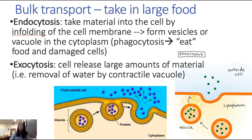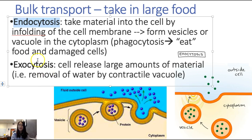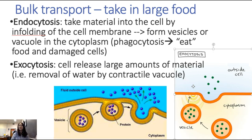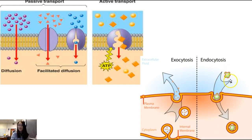You can also do bulk transport, which also requires energy. Bulk transport is for taking in large chunks of material too large to go through the cell membrane directly. We do something called endocytosis or exocytosis. Exocytosis: a vesicle containing large molecules fuses with the cell membrane and the molecules are released outside the cell. Endocytosis is the opposite: a food molecule approaches the membrane, the membrane caves in and surrounds it, forming a vesicle inside the cell to take in the food.